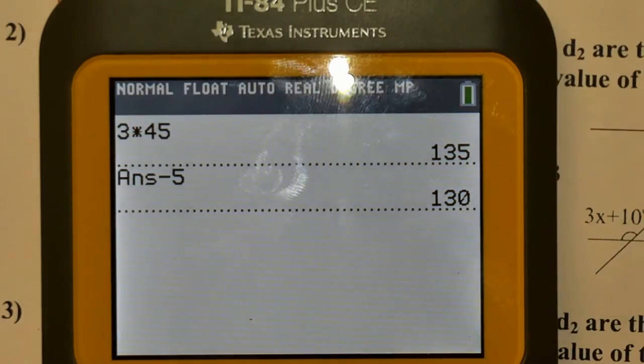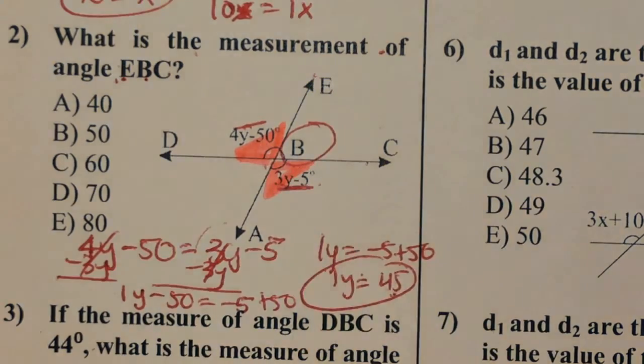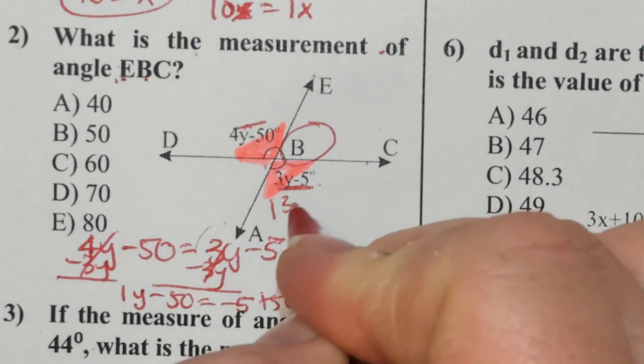So 3 times 45 subtract 5 is 130. That tells me these two angles are both 130.